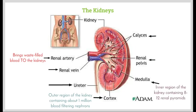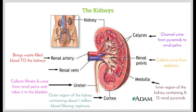Then we have the medulla, which is the inner region of the kidney, and that contains about 8 to 12 renal pyramids. We can see those triangle-shaped structures — they are the different renal pyramids. We then have the calyces, which channel the urine from the pyramids to the renal pelvis. The renal pelvis collects the urine from the nephrons. We then have the ureter, which collects the filtrate and urine from the renal pelvis and carries it to the bladder for storage until it's eliminated.